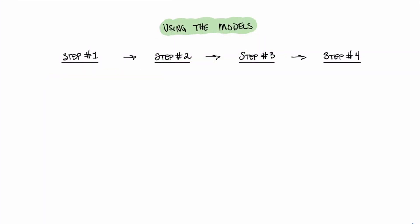Using the small signal equivalent models is a four-step process. The first step in the process is a familiar one. The goal here is to use DC analysis techniques to determine the operating point of the transistor and use that operating point information to calculate the small signal equivalent circuit parameters.